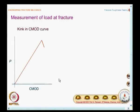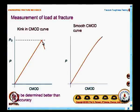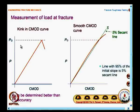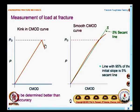To measure the load at fracture, you use a P versus CMOD curve. People classify three different varieties: type 1, type 2, and type 3. On the x-axis is crack mouth opening displacement; on the y-axis is the load. In type 1, the load increases and you have a clear kink on the curve — the load at this kink is referred to as PQ, which also happens to be the maximum load in this type of specimen behavior.